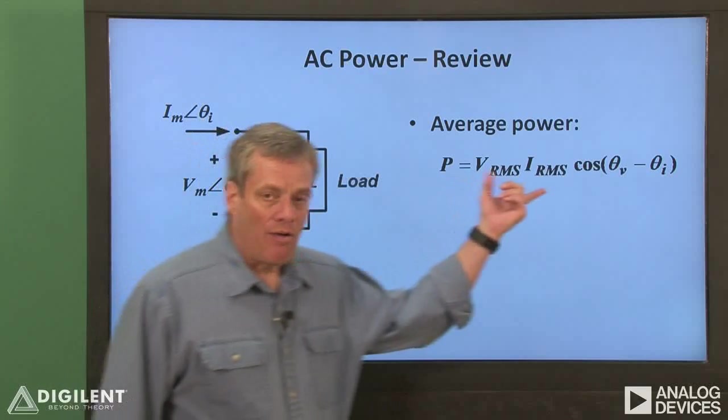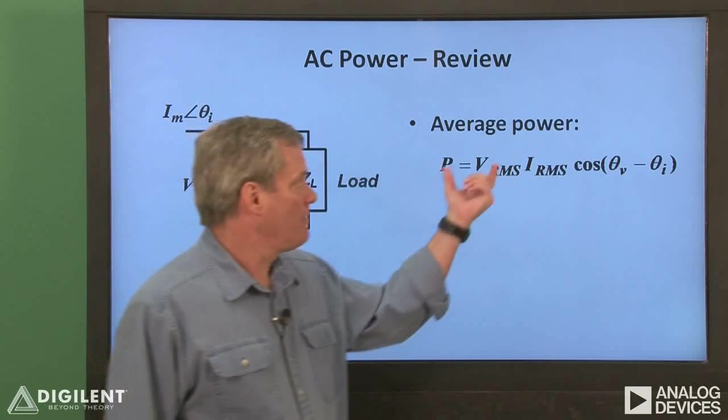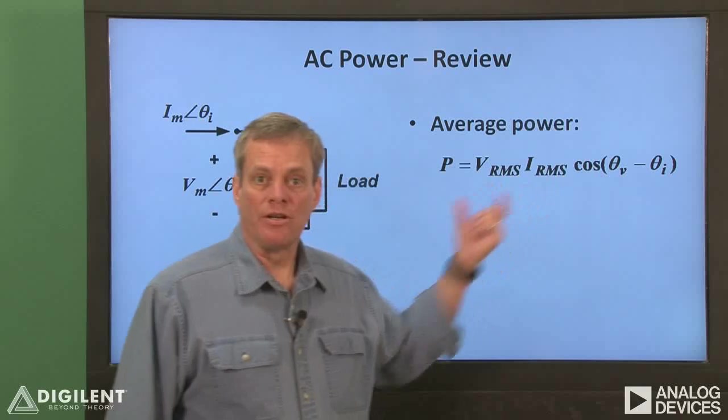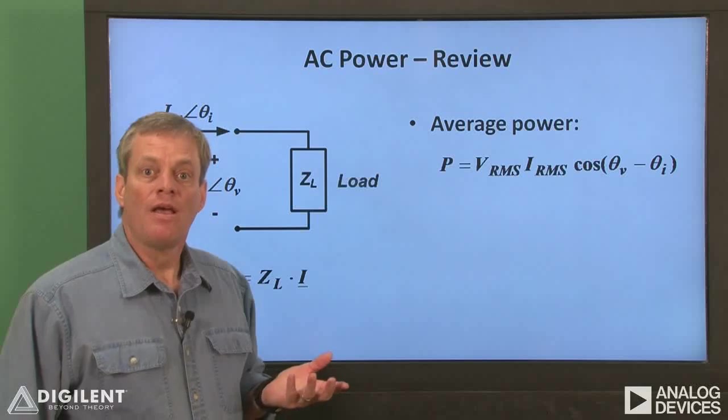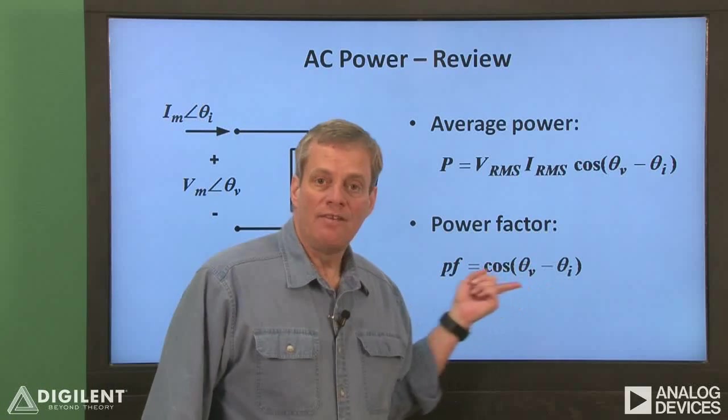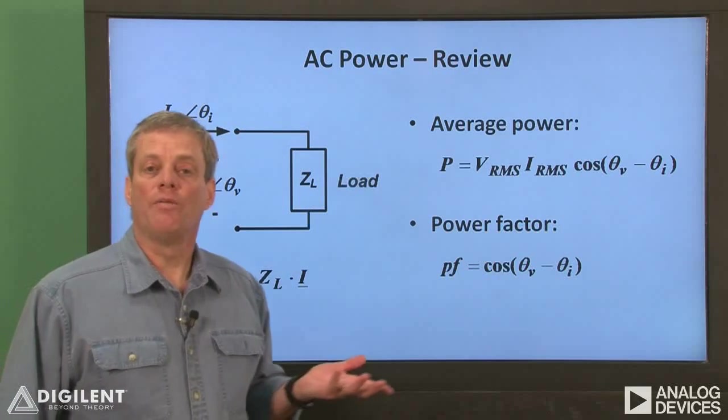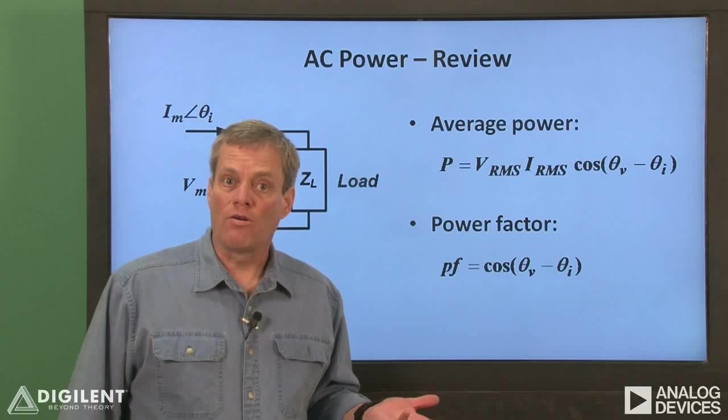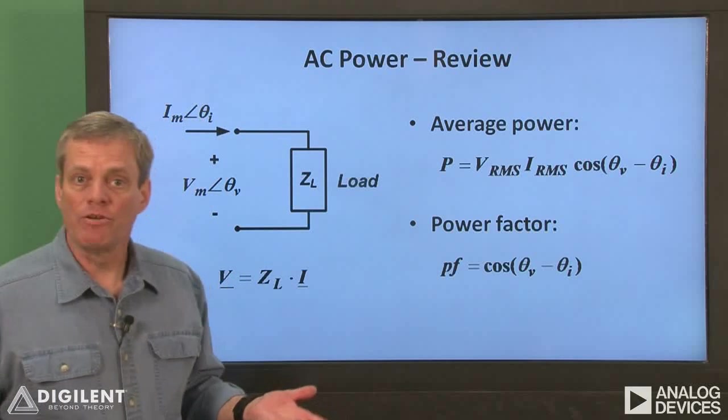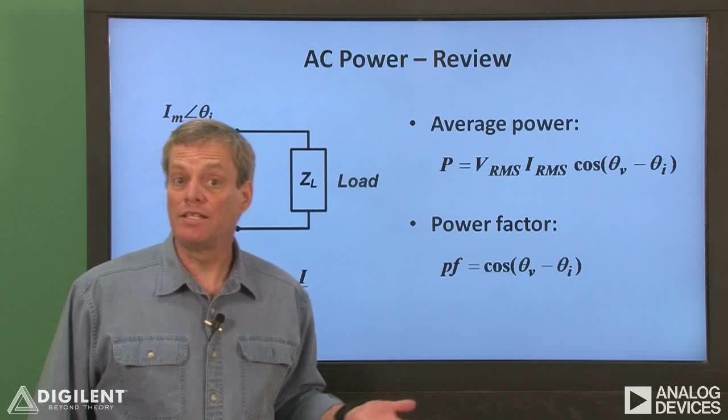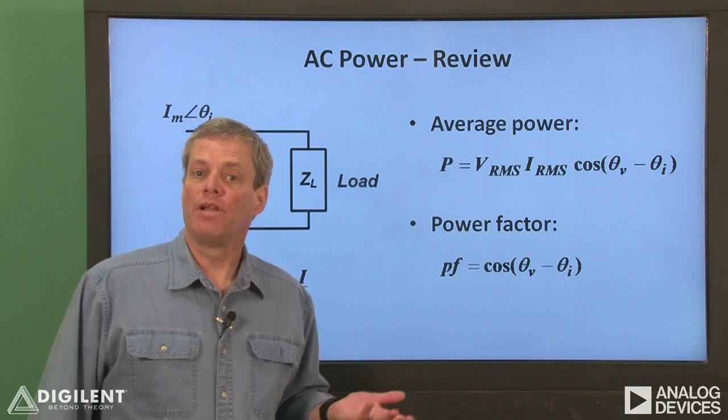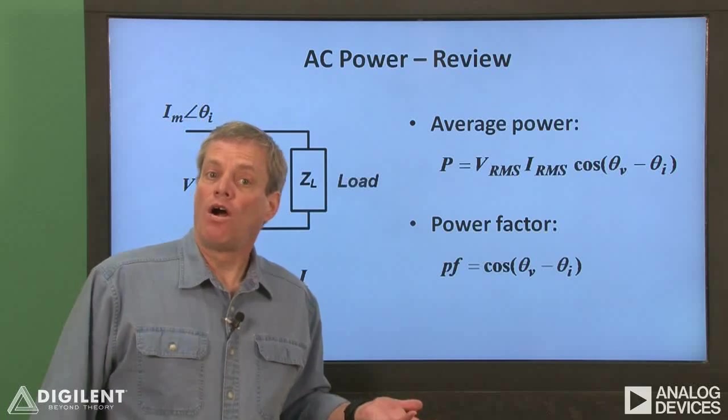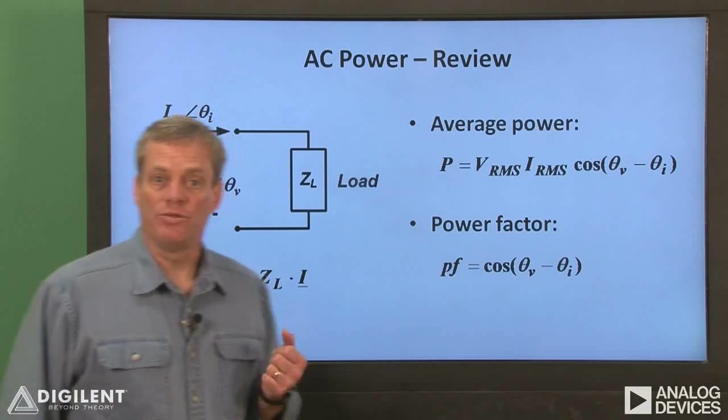The average power delivered to the load is the RMS voltage times the RMS current times the cosine of the phase difference between the voltage and the current. This cosine theta V minus theta I term is called the power factor. A low power factor implies that very little average power is delivered to the load relative to the amplitudes of the voltage and the current, while a high power factor implies that the average power delivered to the load is large relative to the voltage and current amplitudes.